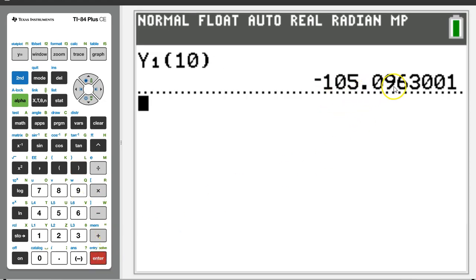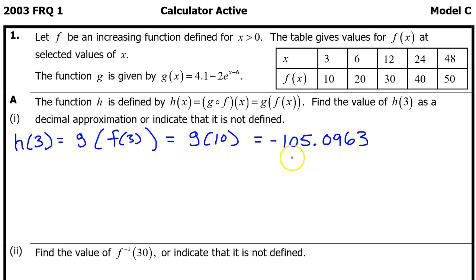The college board will accept 3 decimal places. However, students often attempt to round to 3 decimal places and they lose a point for rounding wrong. So my strong recommendation is always use 4 decimal places and never try to round. So let's record negative 105.0963. And that's it for A Part 1.